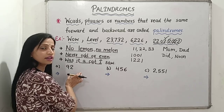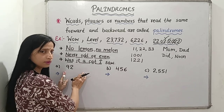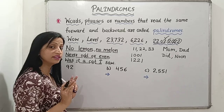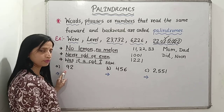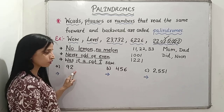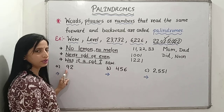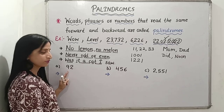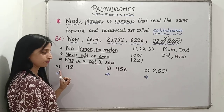Now we will learn how to convert any number into a palindromic number. The procedure is very easy. There is only one step: we have to reverse the number and add it.